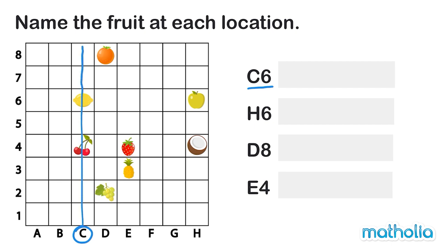We can draw a line up column C and across row 6. We can see that they cross at the lemon. So a lemon is located at C6.